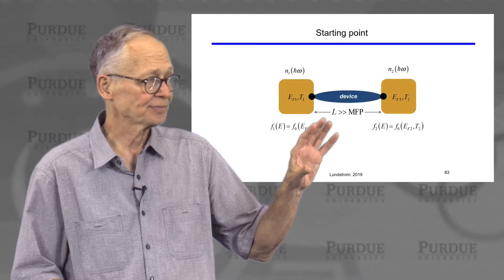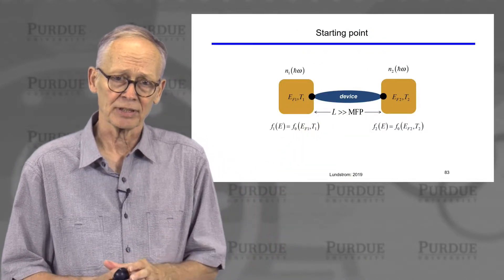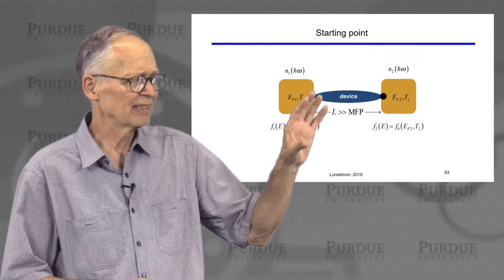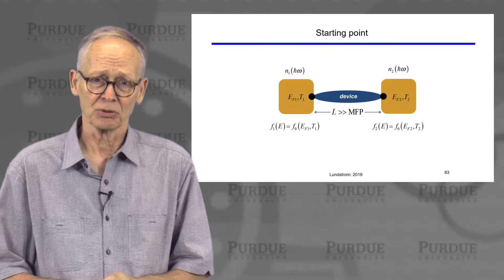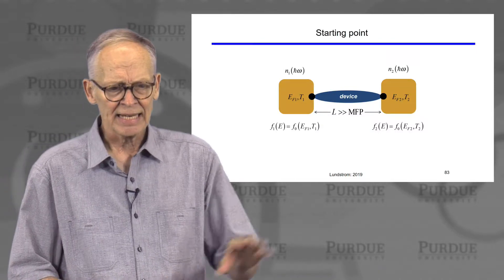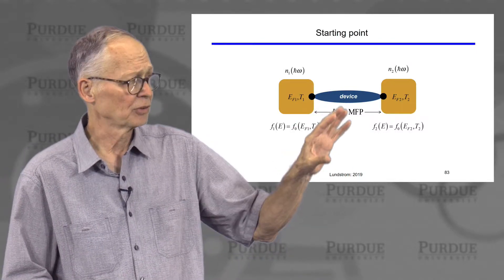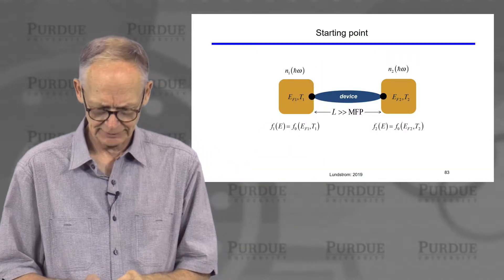We did that not in the conventional way of solving the Boltzmann equation, but with this Landauer approach, which is simply another way to solve the Boltzmann equation. And we did it in a way that we could use for both electrons and phonons.